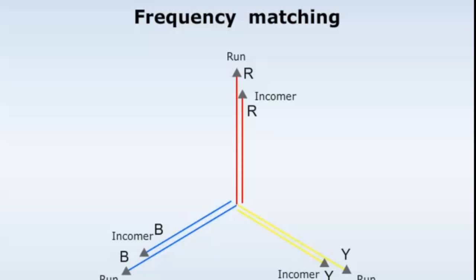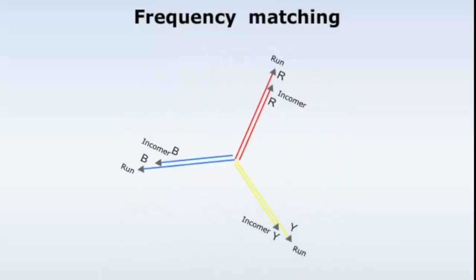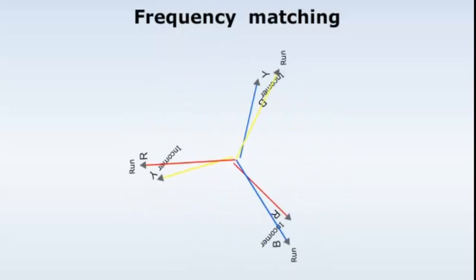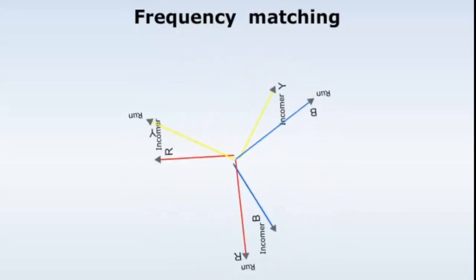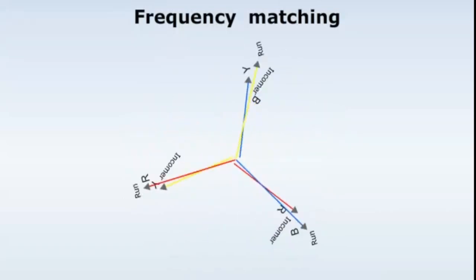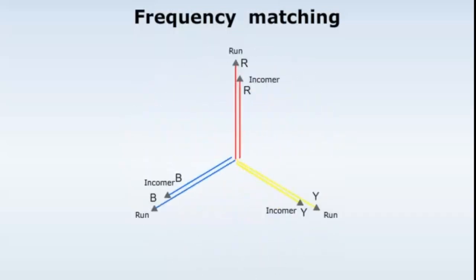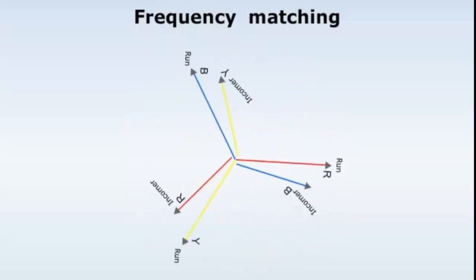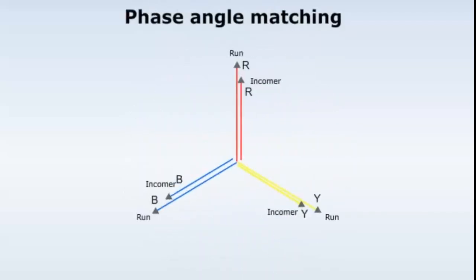The third condition is that the frequency of the incoming alternator should match the frequency of the running alternator. The frequencies will be equal when the alternators are rotating at the same speed. A difference in frequency indicates that the stored energy in the rotor of the incoming alternator is either greater or less than the running alternator. Therefore, if paralleling is carried out when a frequency difference exists, a surge will take place.